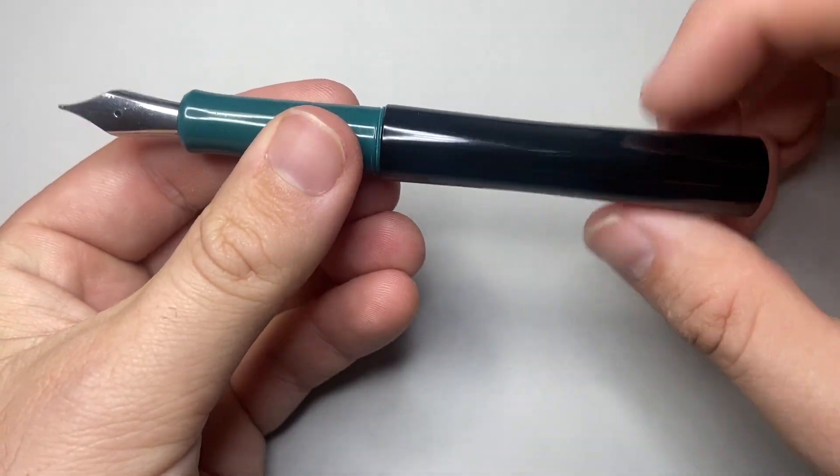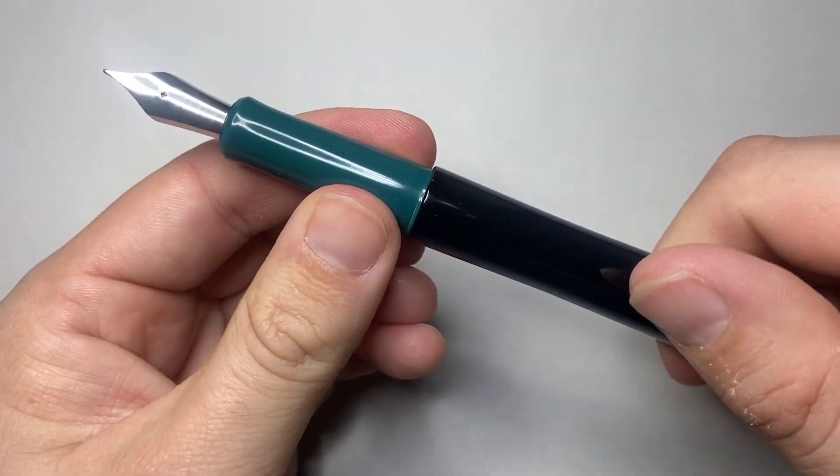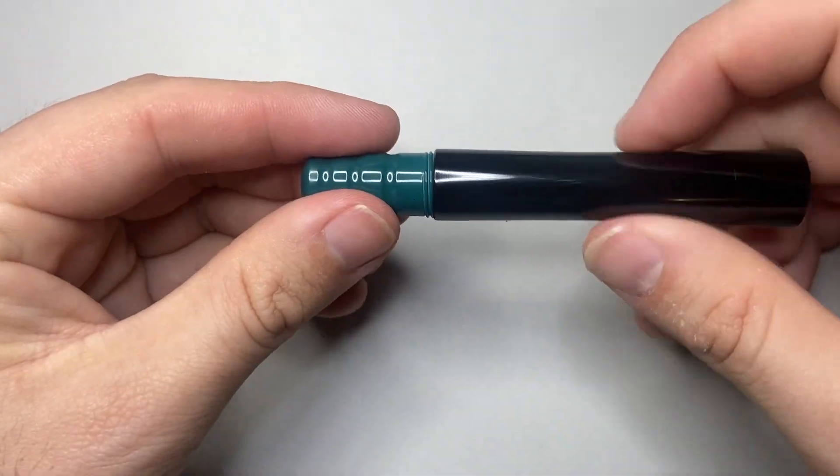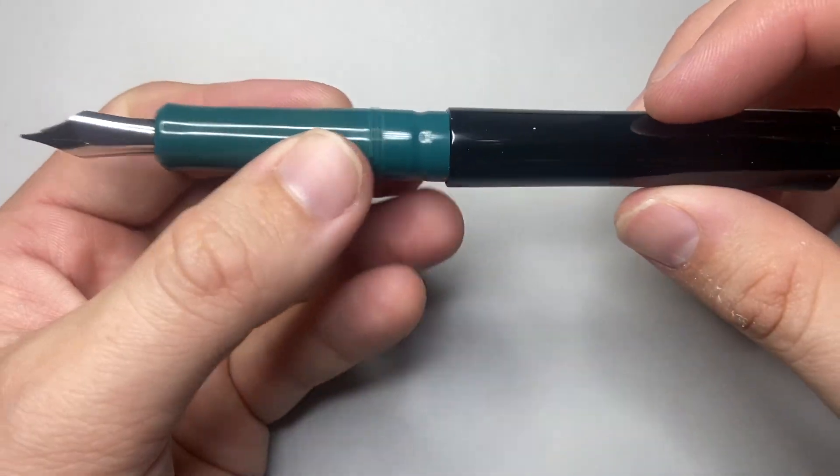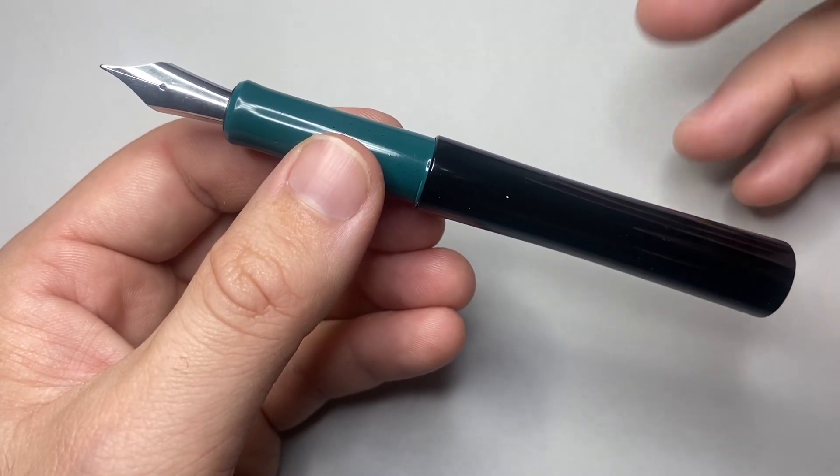Typical of a pocket pen, it screws onto the back here. What's really nice about this model, something I really love, is that it's a single set of threads for both capping and posting.